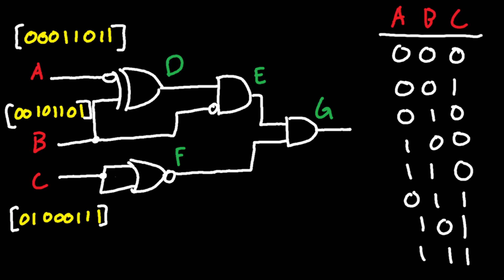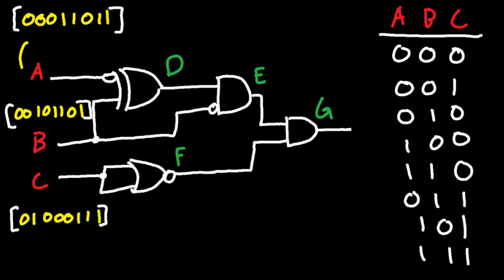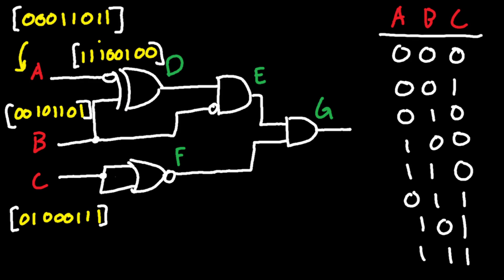This bracket represents the NOT gate for A. A goes straight into this exclusive OR gate, but A has to be NOTed first. So we NOT all the values: 1,1,1,0,0,1,0,0. I just NOTed all the values inside of the A bracket.